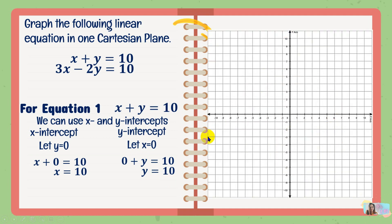This is our Cartesian plane. We find positive 10 on the x-axis and plot the first point there. For the y-intercept, here is the y-axis and positive 10 is our y-intercept — we put the point there. Then we draw a straight line using a ruler so that it is a proper straight line. This will be our first line or graph of the linear equation x plus y equals 10.